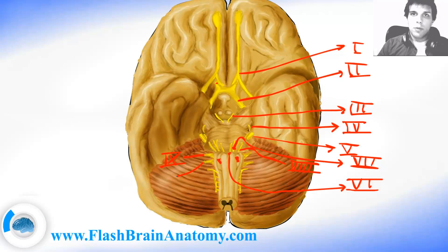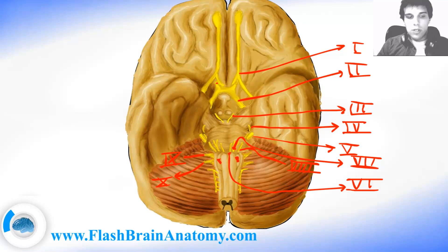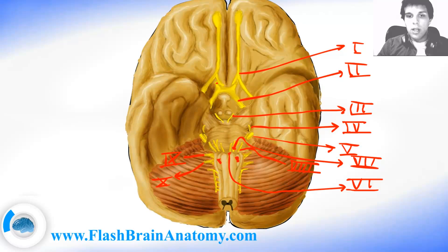Cranial nerve number 10 is the vagus. It receives special sense of taste and also provides parasympathetic fibers to almost all thoracic and abdominal viscera.